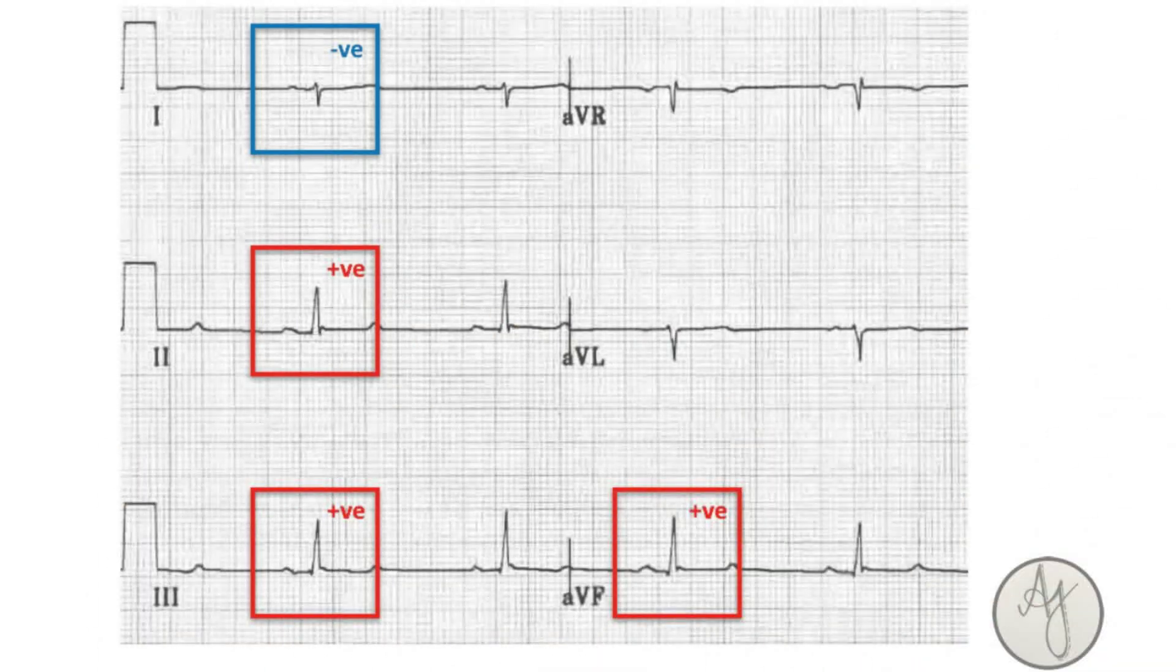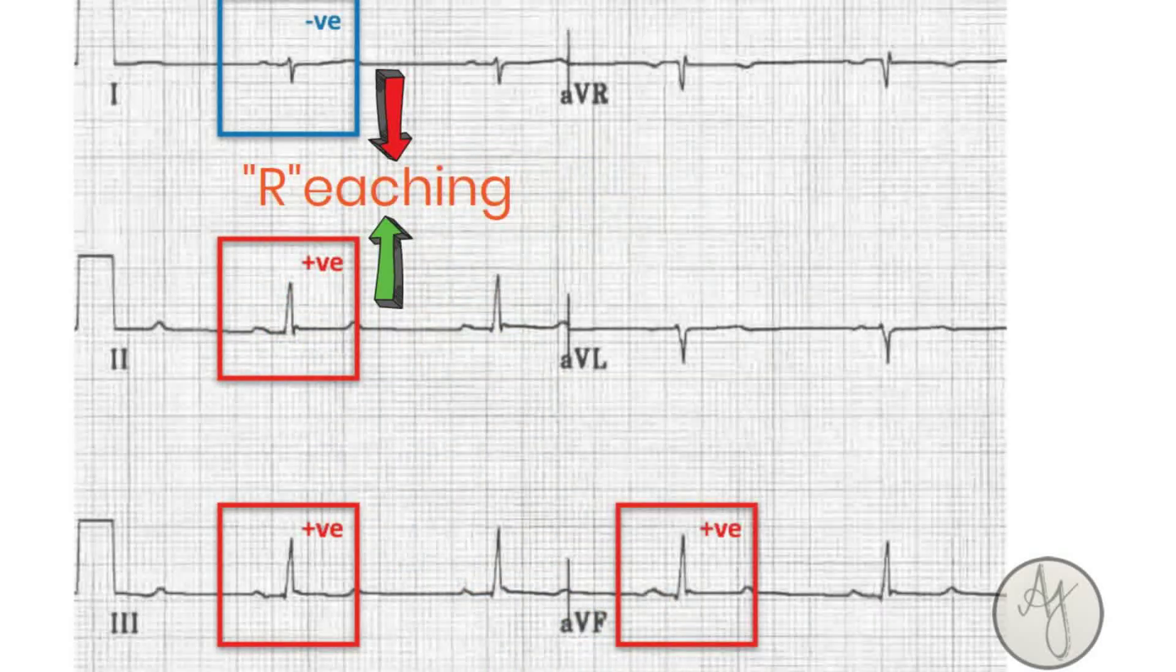Similarly, if one is negative and two is positive, they appear to be reaching for each other. So this is a right axis deviation.